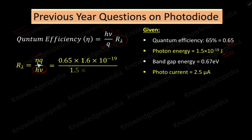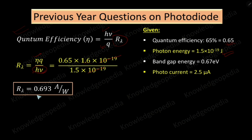Substituting: R_lambda = 0.65 × 1.6×10⁻¹⁹ / 1.5×10⁻¹⁹. Canceling 10⁻¹⁹ from numerator and denominator gives 0.65 × 1.6 / 1.5. Calculating this, R_lambda = 0.693 ampere per watt.